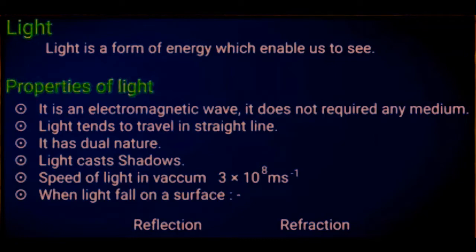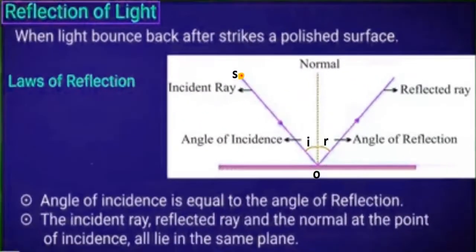Next, what is reflection of light? When light bounces back into the same medium after striking a polished surface, it is called reflection of light. As shown in the figure, suppose light is coming from a source S and is incident at a point O on a polished surface, making an angle I with the normal. This incident ray, after striking the surface, bounces back making an angle R with the normal. Here, I is called the angle of incidence and R is called the angle of reflection.